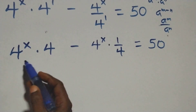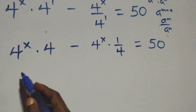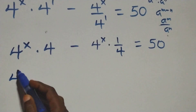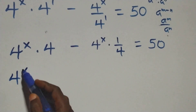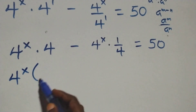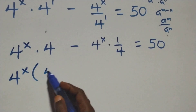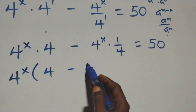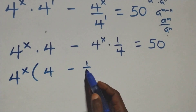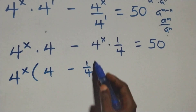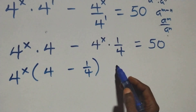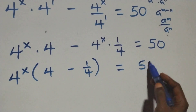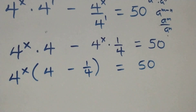At this, we have 4 raised to power x — we factor it out as a common factor — and we have 4 raised to power x into bracket, here we mean 4 minus 1 over 4, close bracket, equals 50 from here.